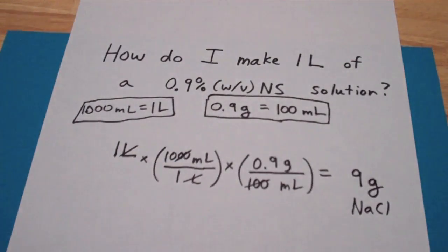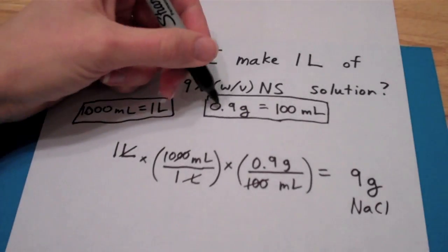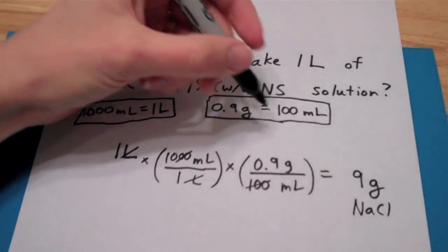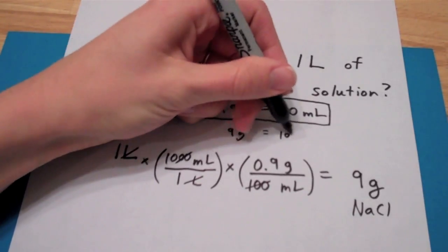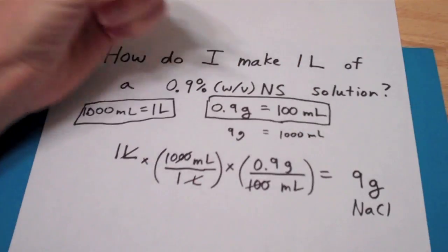Now ask yourself, does that make sense? Yeah. If it took 0.9 grams for every 100 milliliters, then 9 grams for every 1,000 milliliters.